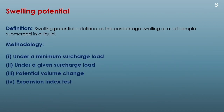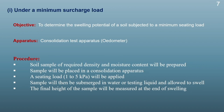We will see one by one how to determine the swelling potential and swelling pressure. Swelling potential is defined as the percentage swelling of a soil sample submerged in a liquid, which can be water or any salt solution. There are several methods to measure swelling potential. The four methods generally used are: number one, under a minimum surcharge load; number two, under a given surcharge load; third, potential volume change; and fourth, expansion index test. The first two tests are most commonly used.